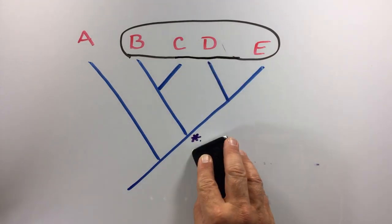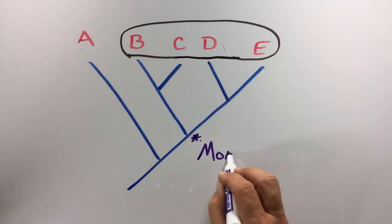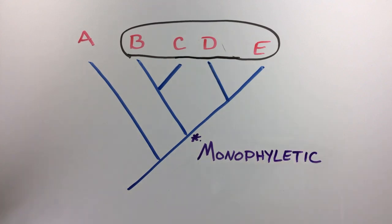Biologists prefer to include all of the descendants of a common ancestor in their groupings, so by including D in this genus we now have what biologists call a monophyletic group, meaning that this genus now contains all of the descendants of the four species' most recent common ancestor.